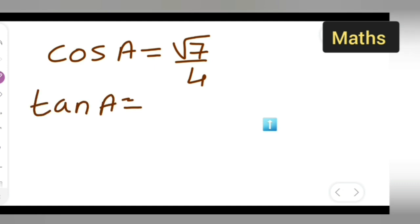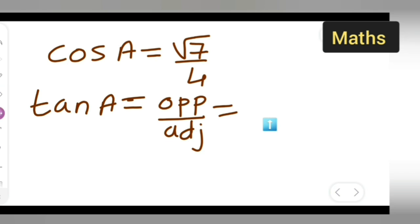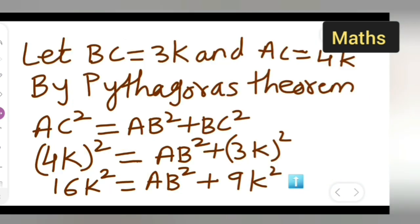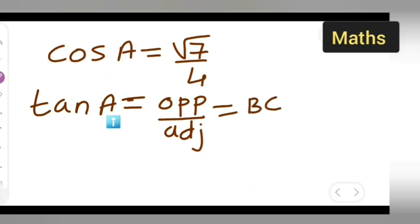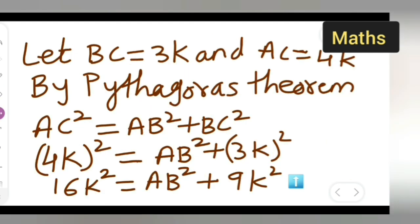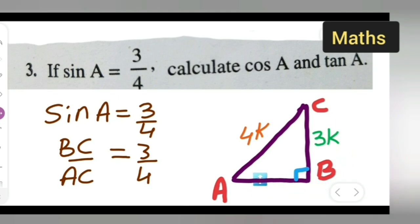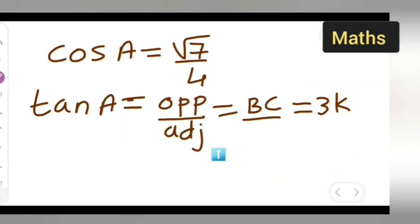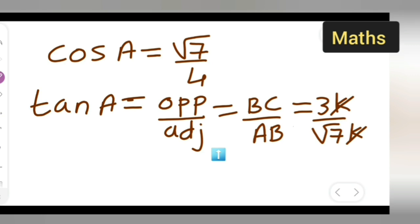Now let us find tan A. Tan A is opposite side upon adjacent. The opposite side of A is BC, which is 3k. The adjacent side of A is AB, which is root 7k. So tan A equals BC upon AB, which is 3k upon root 7k. The k's cancel, giving tan A equal to 3 upon root 7.